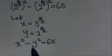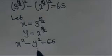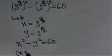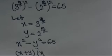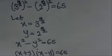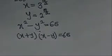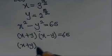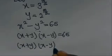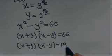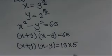We observe this is a difference of two squares, such that x squared minus y squared equals x plus y, times x minus y. And 65 can be expressed as the product of 13 times 5.